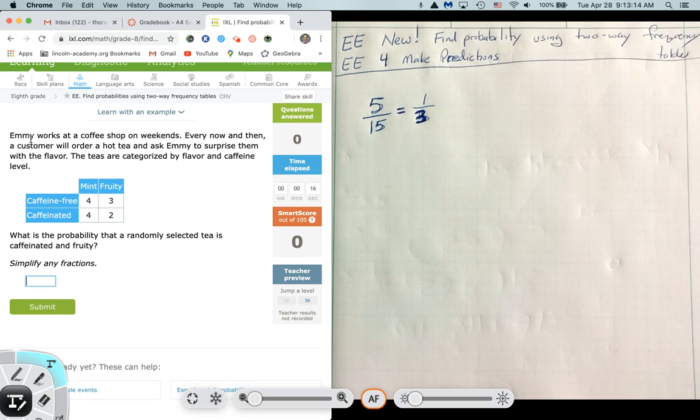That helps you get a feel for the problem, and then we'll actually try to answer the question. Emma works at a coffee shop on weekends. Every now and then, a customer will order a hot tea and ask Emma to surprise them with the flavor. The teas are categorized for flavor and caffeine level. So for instance, this table obviously says that there were four customers that she ended up giving a caffeine-free tea that was mint. There were three customers that got a caffeine-free that was fruity. There was four customers that had caffeinated that was mint, and there was two that was caffeinated that were fruity.